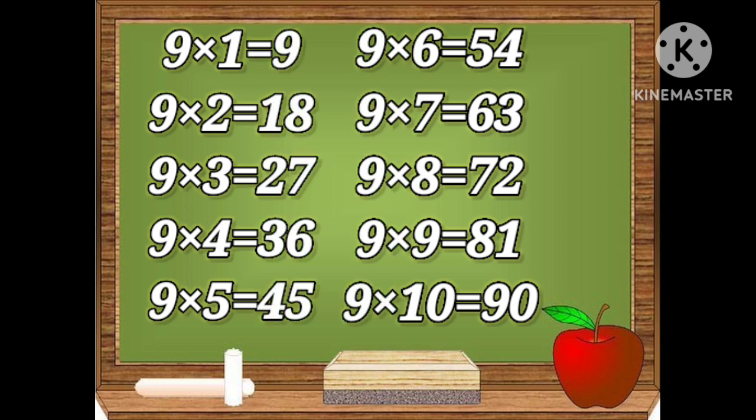Nine ones are nine, nine twos are eighteen, nine threes are twenty-seven, nine fours are thirty-six, nine fives are forty-five, nine sixes are fifty-four, nine sevens are sixty-three, nine eights are seventy-two, nine nines are eighty-one, nine tens are ninety.